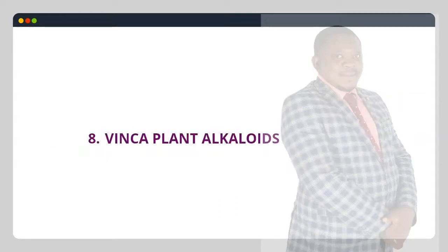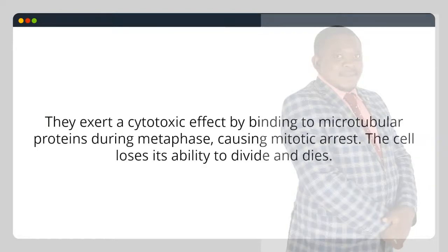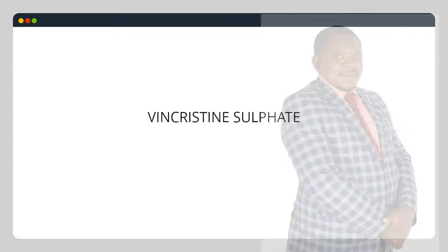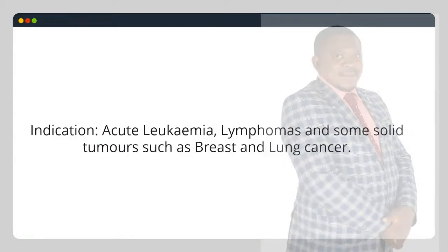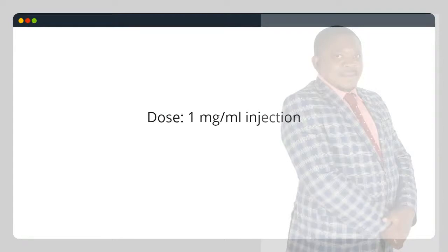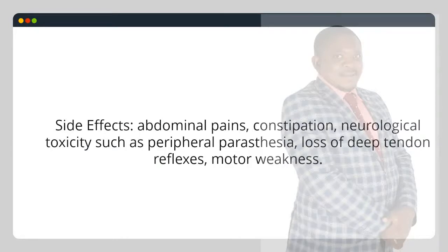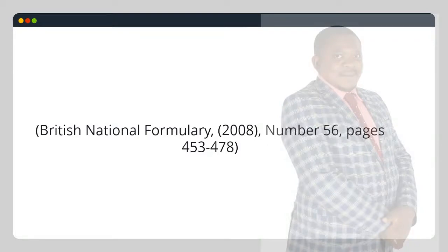8. Vinca plant alkaloids: cell cycle phase specific. They exert a cytotoxic effect by binding to microtubular proteins during metaphase, causing mitotic arrest. The cell loses its ability to divide and dies. Vinblastine sulfate — indication: acute leukemia, lymphomas and some solid tumors such as breast and lung cancer. Dose: 1 mg/mL injection. Side effects: abdominal pains, constipation, neurological toxicity such as peripheral paresthesia, loss of deep tendon reflexes, motor weakness. (British National Formulary, 2008, No. 56, pages 453–478.)